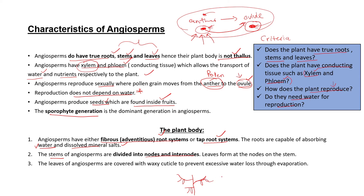The leaves of angiosperms are covered with a waxy cuticle. The function of the cuticle is to prevent the excessive loss of water through evaporation. When the leaves have a waxy cuticle, water is not lost from the plant excessively. Plants lose water through transpiration, and the cuticle prevents the leaves from losing their water through evaporation.